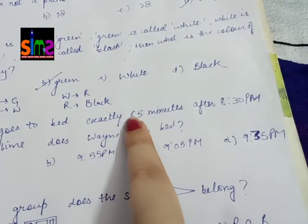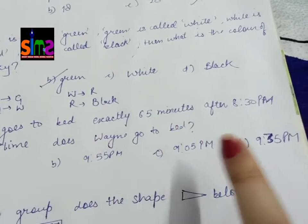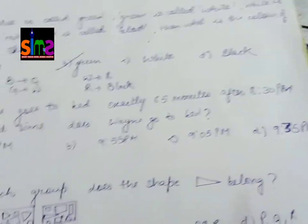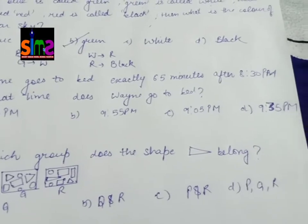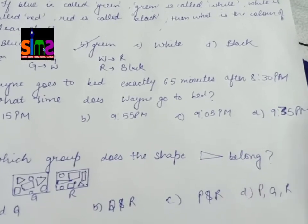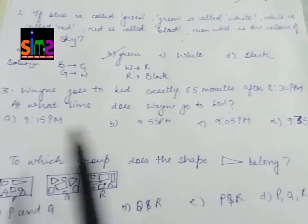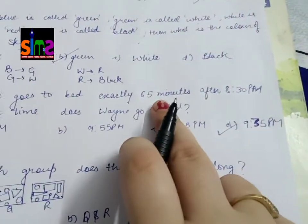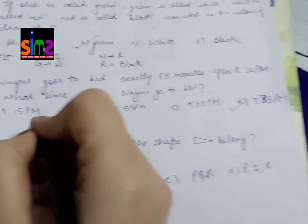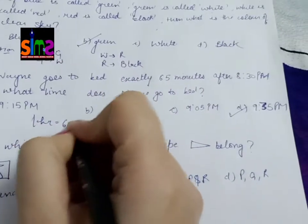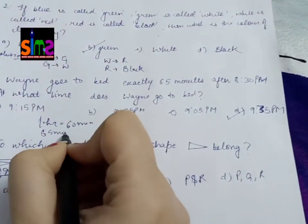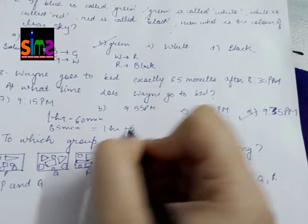So 65 minutes equals how much? 1 hour plus 5 minutes. How many minutes are in 1 hour? 60 minutes. And what does 65 minutes mean? 1 hour plus 5 minutes.